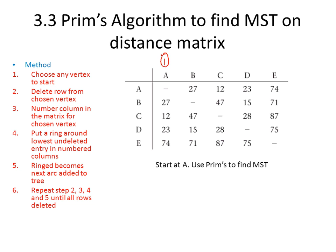We can't travel to A, so we cross out the row with A in. We now look for the smallest number in A's column — that's 12. So our first part of travelling will be from A to C, which is 12. People always seem to forget to actually do this part of the question, writing down what they've got to do. So we're now at C, so we put a 2 above C.